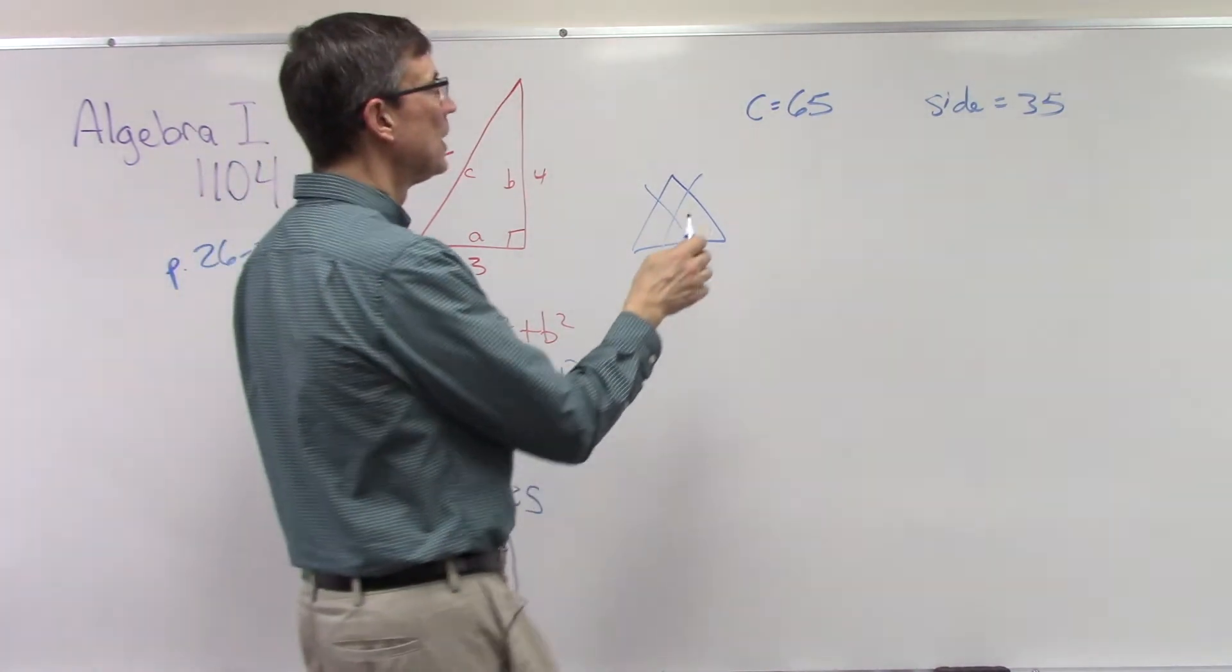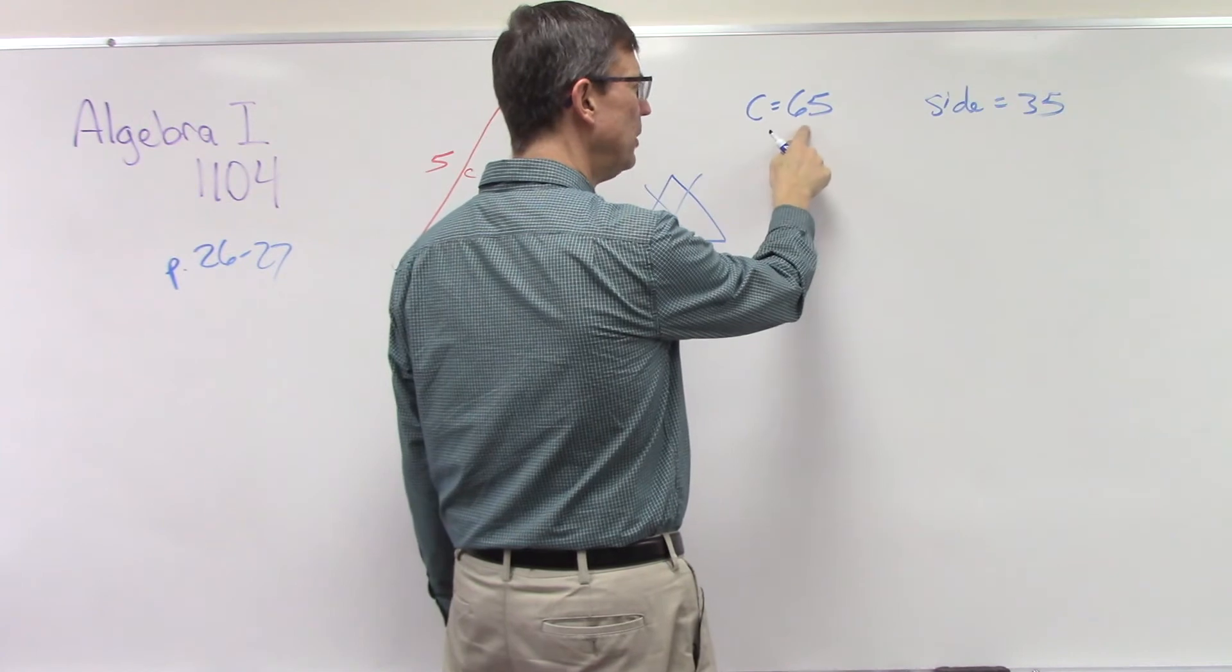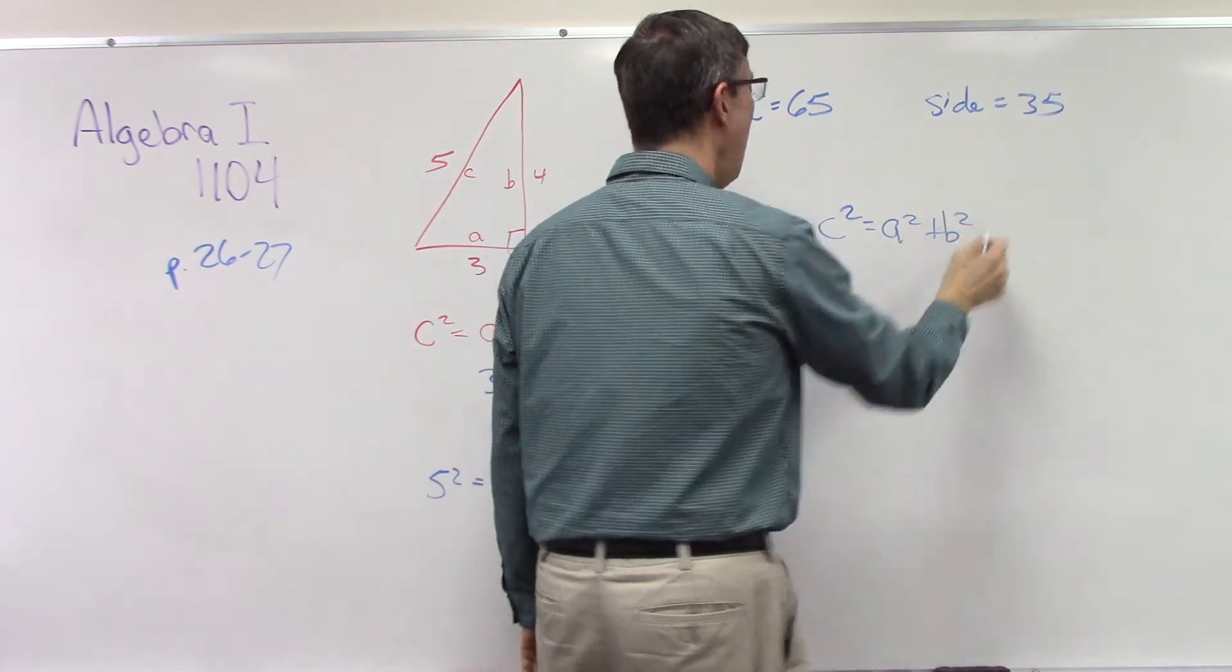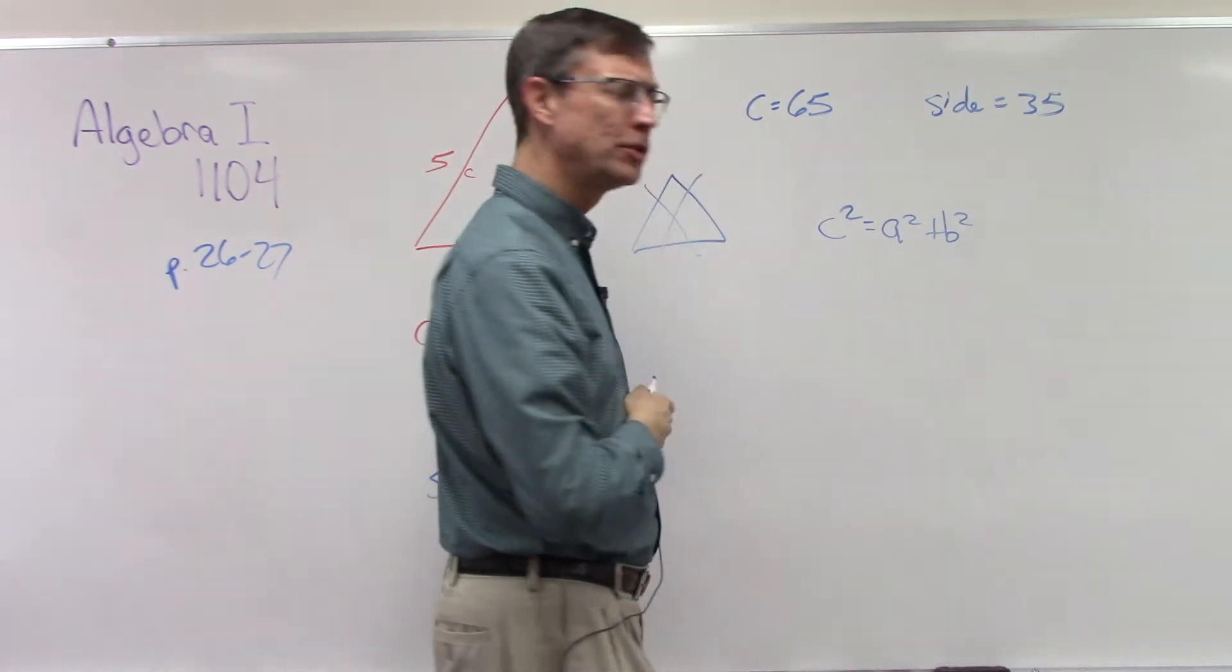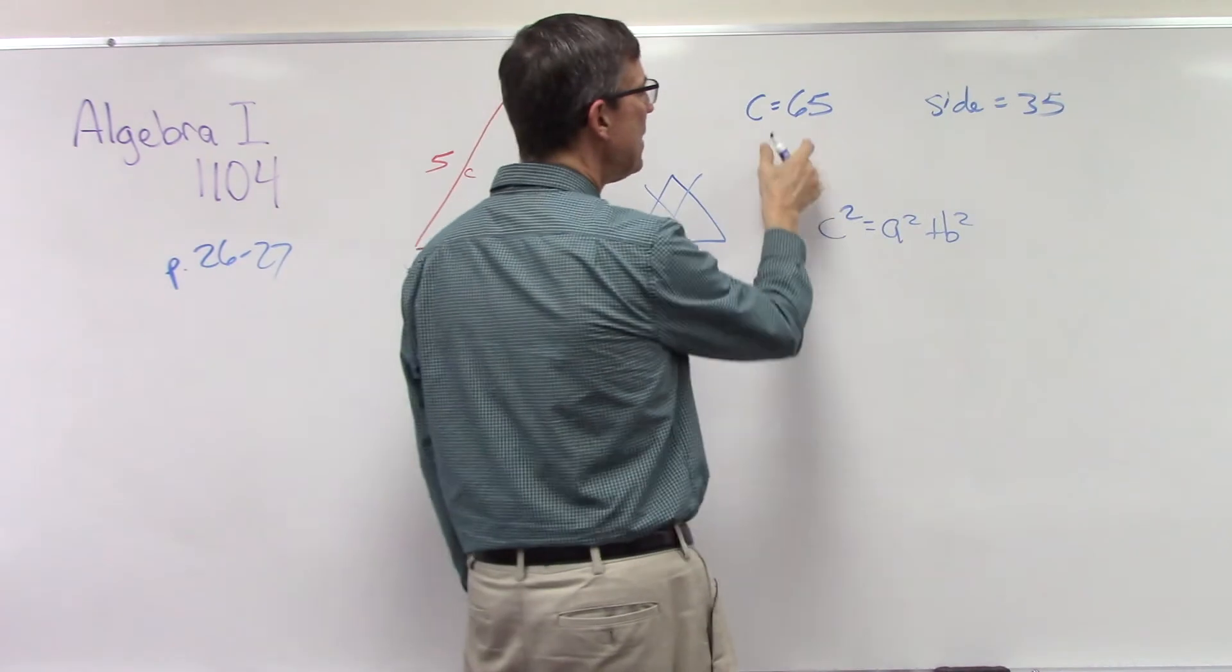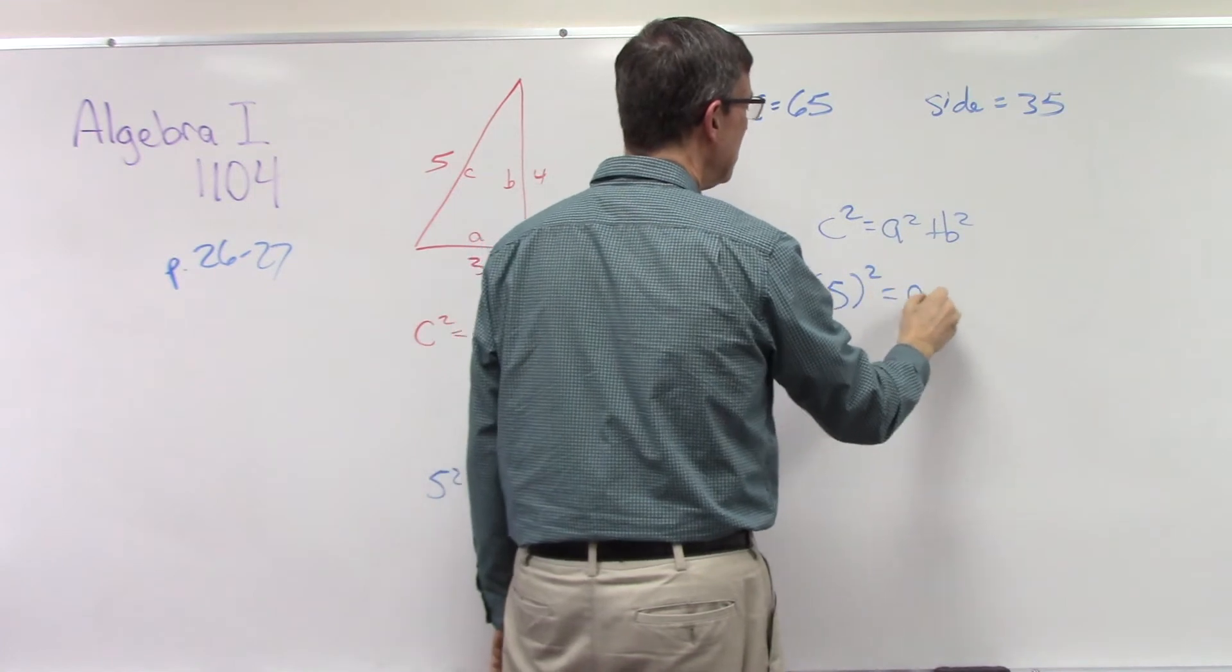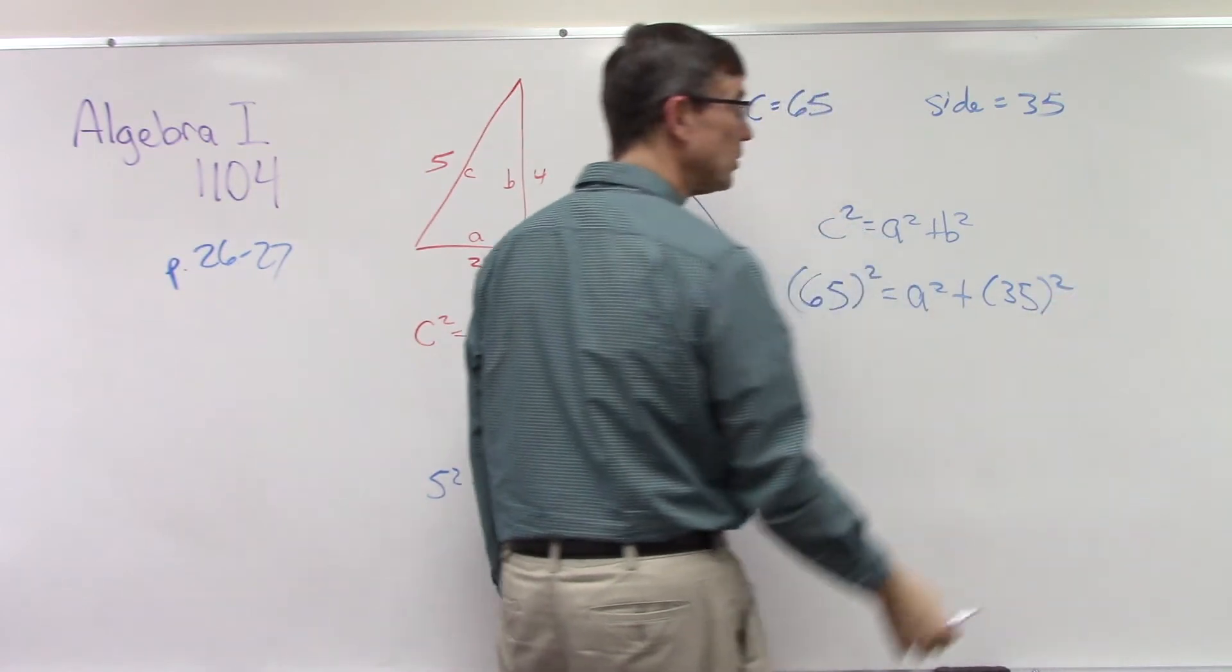Now here's the key. If the problem tells you that the hypotenuse is a given number, then you have to put that on the left. Excuse me. I'm not sure if I'm allergic to morning or if I'm catching a cold. So if the hypotenuse is 65, then I have to put that over here on this side.